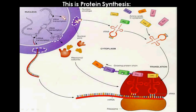This forms a long chain of amino acids, also known as a polypeptide chain. Once that polypeptide chain gains a specific shape for a function, we then refer to it as a protein.